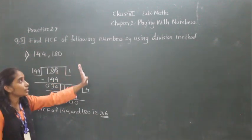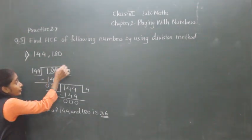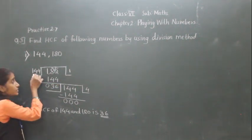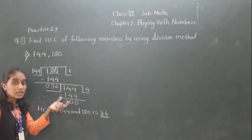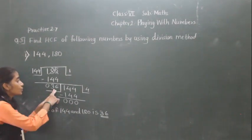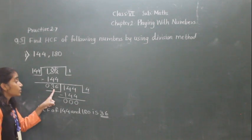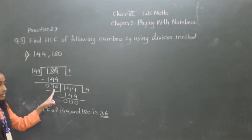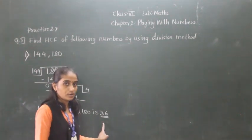So using the division method, every time we are doing division. We divide the greater number by the smaller number. 144 divided gives us a remainder of 36. We need the remainder to reach 0, so we continue the division. 36 fours are 144, so remainder is 0. The divisor of the last step is the HCF. So the HCF here is 36.